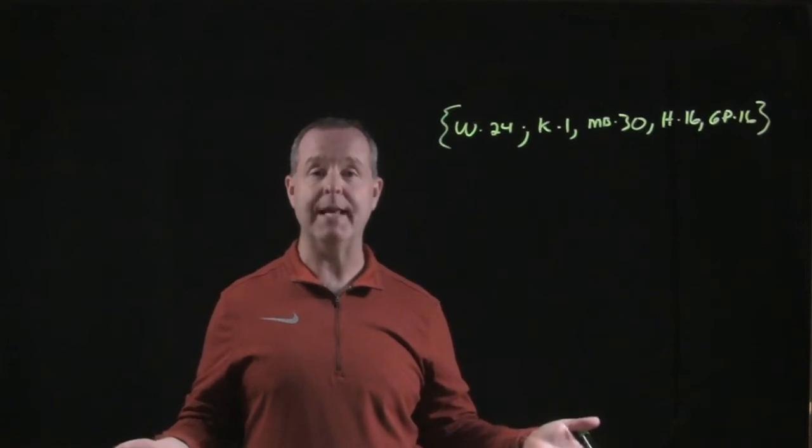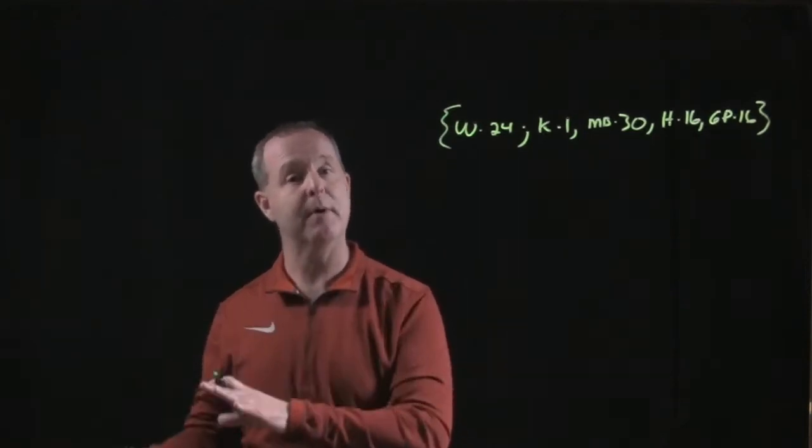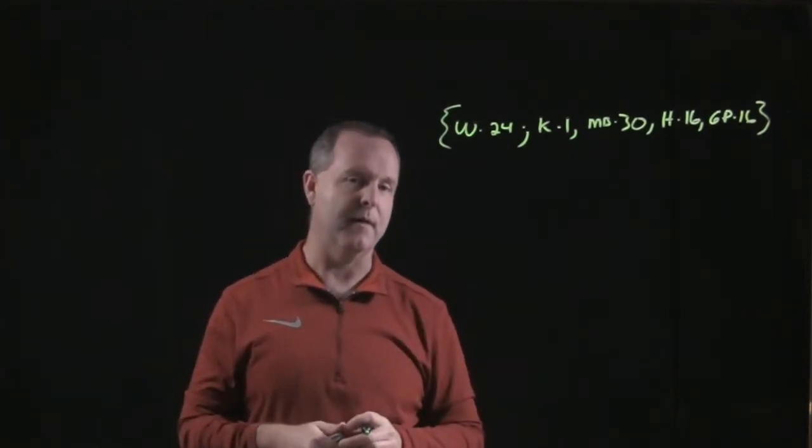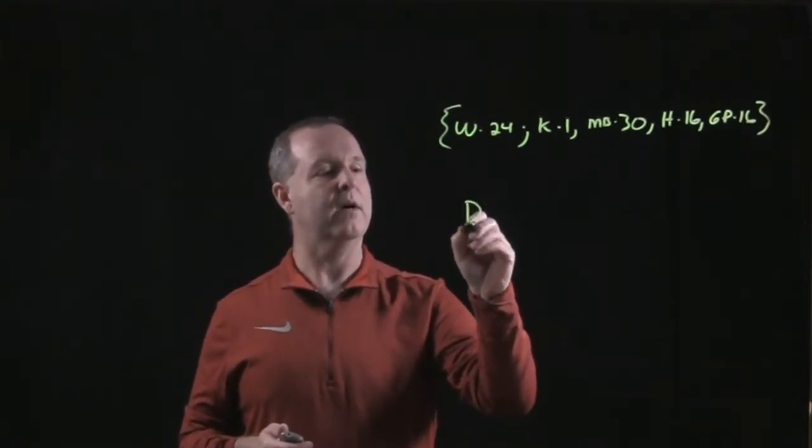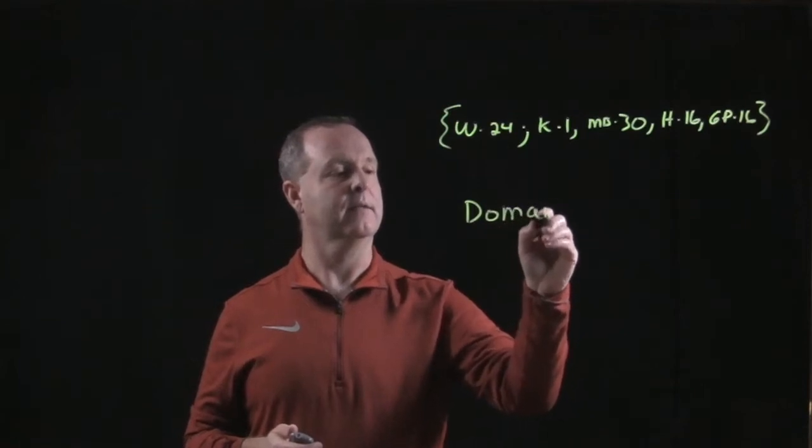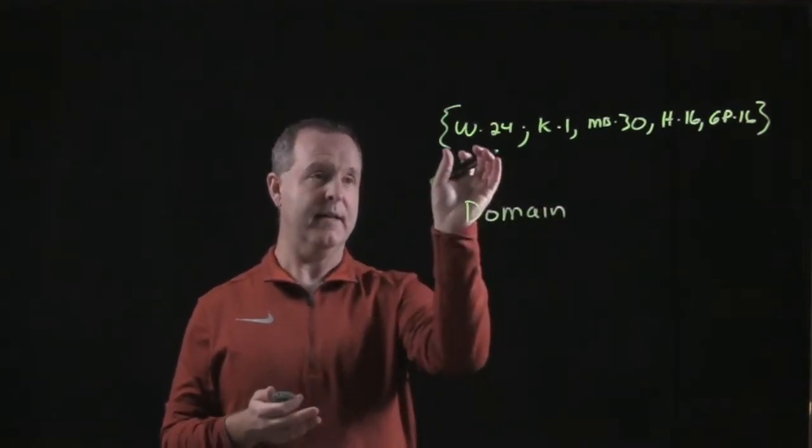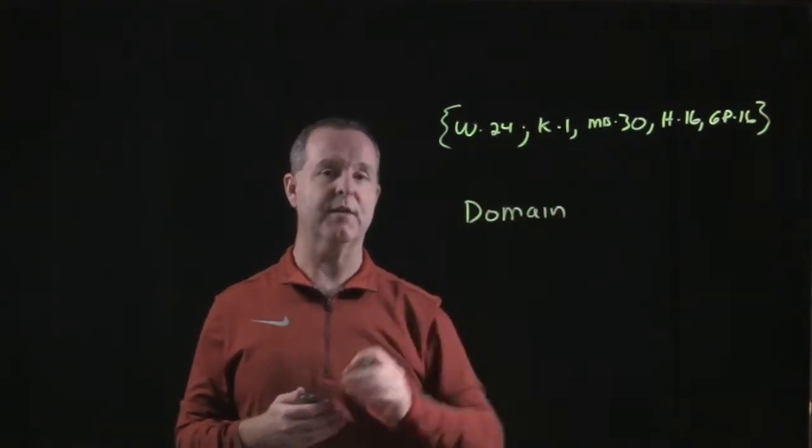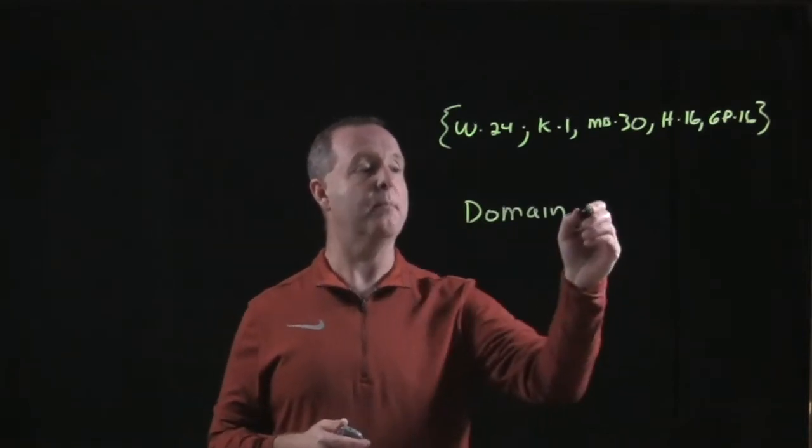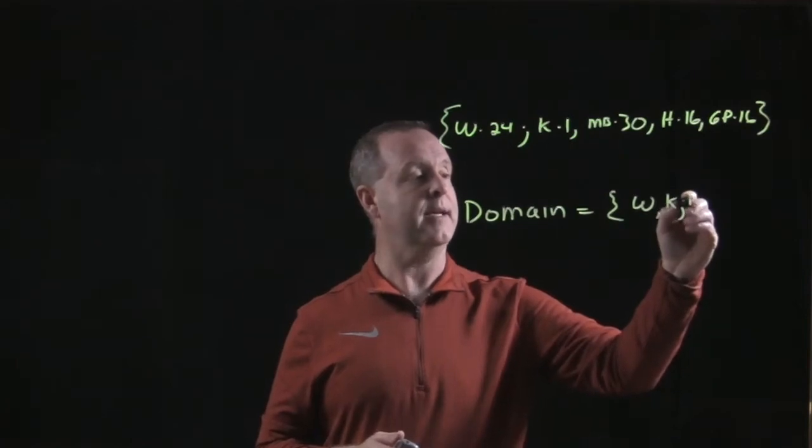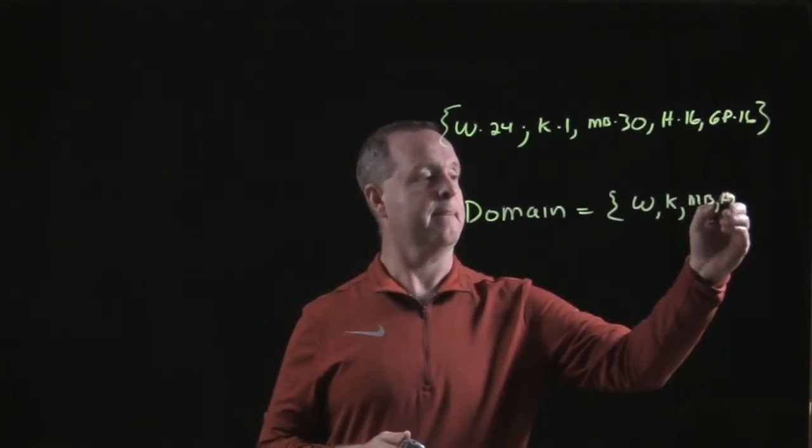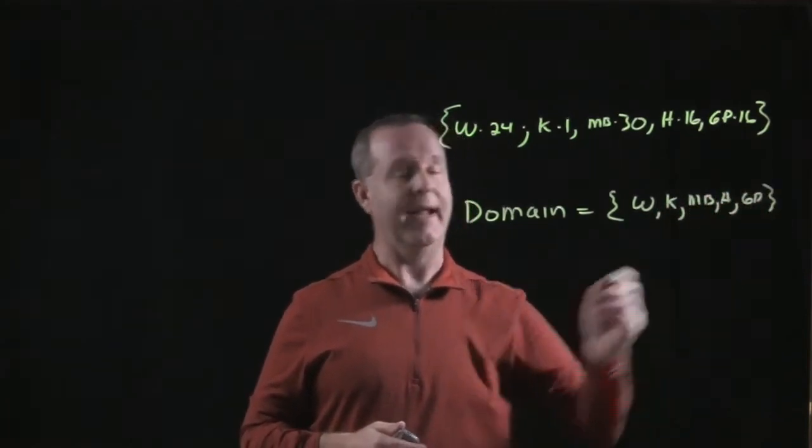So here I have a relationship, the relationship between a member of our family and the day of the month that they were born. What we look at that then is that we have a domain. A domain represents the first element in each of those relationships. So my domain would include me, my wife, my kids, and our pet.